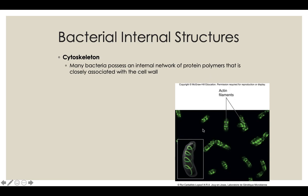Bacteria also have a cytoskeleton — a filament of actin protein that gives the cell wall extra rigidity. Think of it as the rebar in concrete: the cell wall is strong on its own, and the cytoskeleton is also strong, but together they provide extra strength. The bacterial cytoskeleton is used for support — to keep the cell structure open and allow the cell to function successfully.